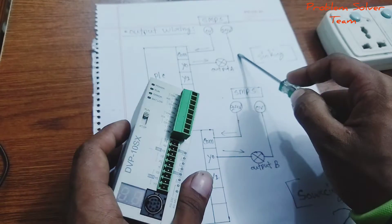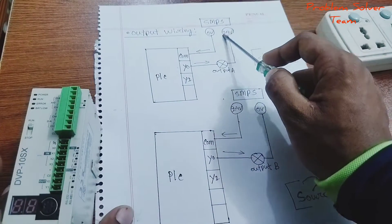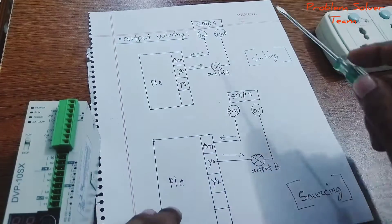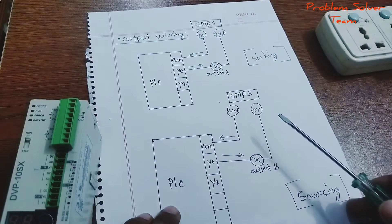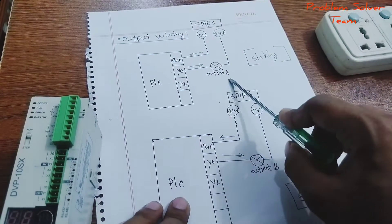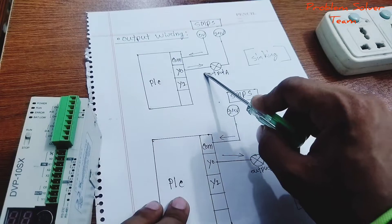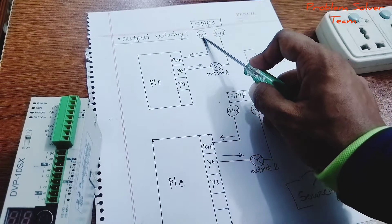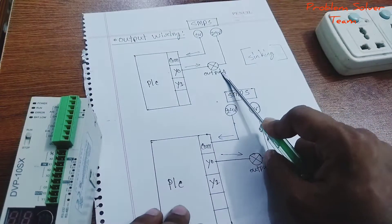This circuit is a sinking circuit. Now if you think about this opposite side, output A section has 24V flow through Y0 and the common pin. The 0V goes to SMPS output A section.